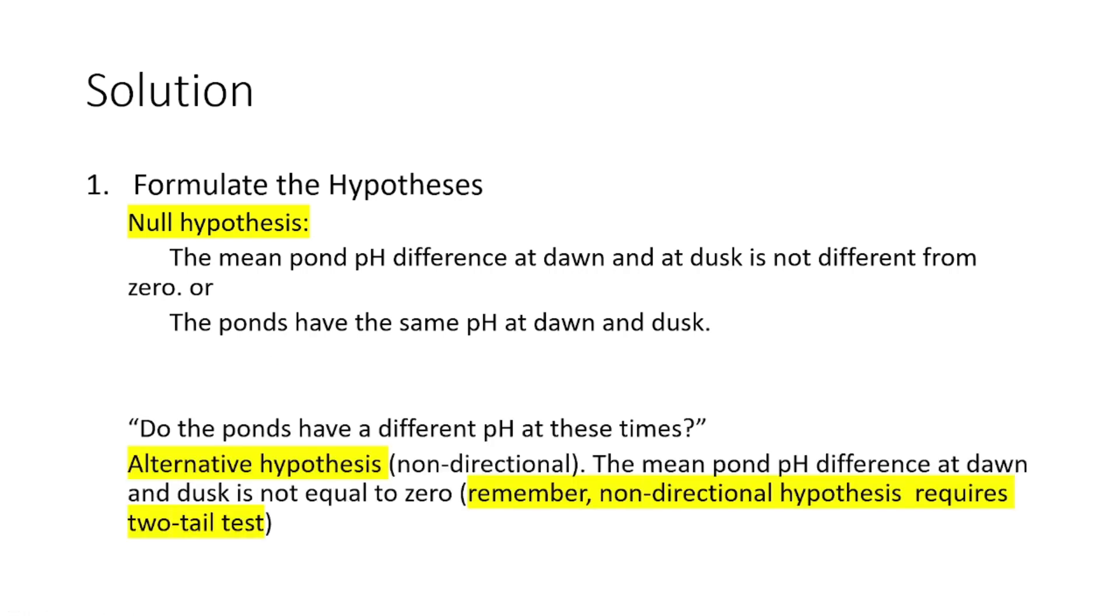Our alternative hypothesis should be non-directional because the problem asked if the ponds have different pH during dawn and dusk. In this instance, we can state our alternative hypothesis in this manner: The mean pond pH difference at dawn and at dusk is not equal to 0. Please remember non-directional hypothesis requires a two-tail test.